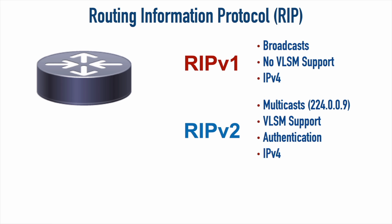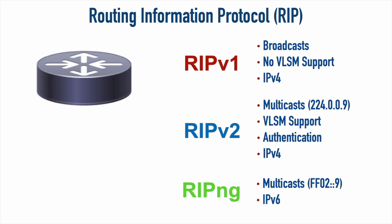There is a version that supports the routing of IPv6, called RIP NG, where NG stands for Next Generation. If you're a Star Trek: The Next Generation fan — yes, they did get the name from Star Trek. RIP NG supports IPv6 routing and sends its advertisements to the IPv6 multicast address ff02::9.